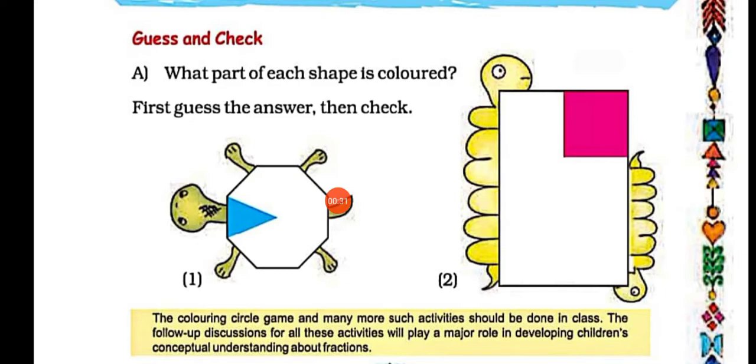We will read question A: what part of each shape is colored? First guess the answer and then check.